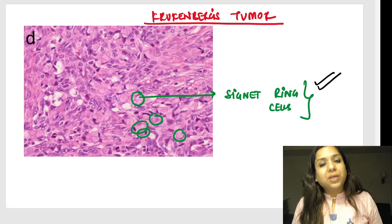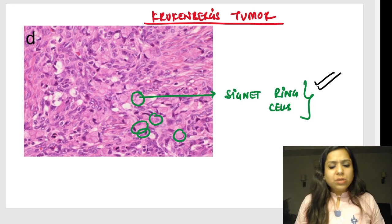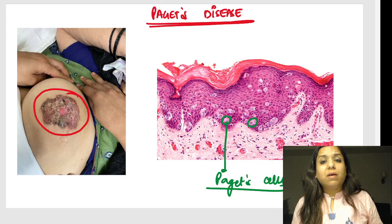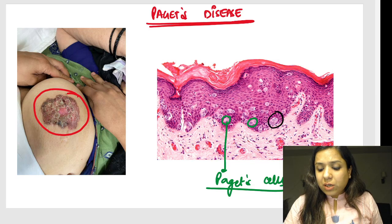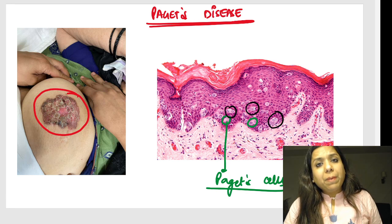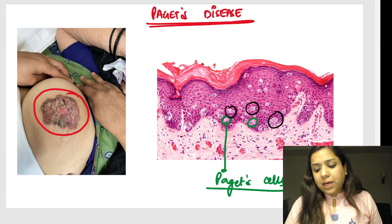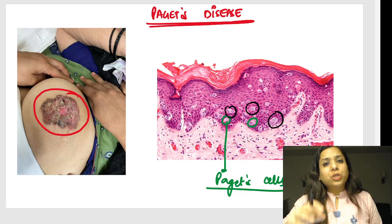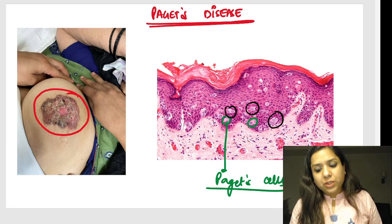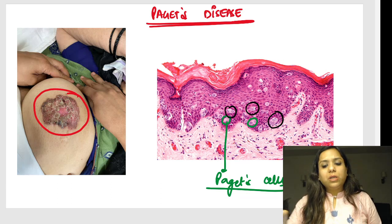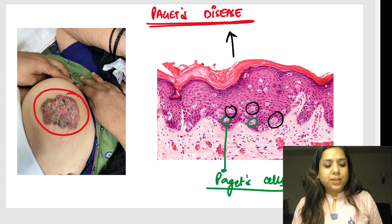Now two very important images from the breast. First is Paget disease. Appreciate these cells in the epidermis — cells with a perinuclear cytoplasmic vacuolation or halo. These are the Paget cells. There will be a history of a patient with an erythematous or scaly eruption of the breast. This combination — think Paget disease.